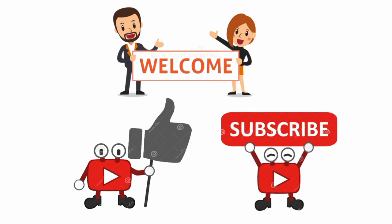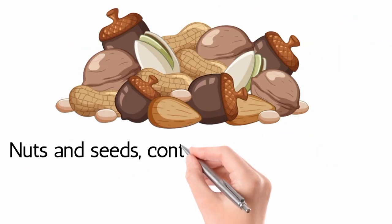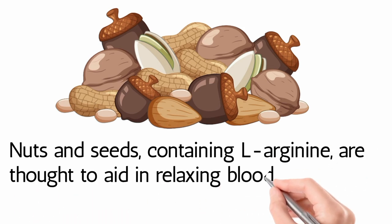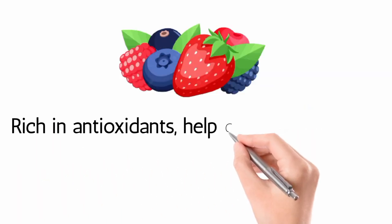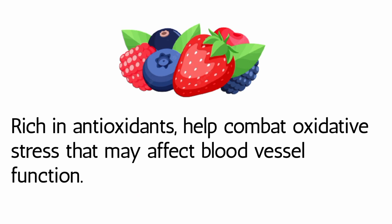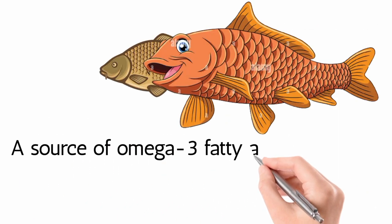Nuts and seeds containing L-arginine are thought to aid in relaxing blood vessels. Berries rich in antioxidants help combat oxidative stress that may affect blood vessel function. Fatty fish, a source of omega-3 fatty acids, contributes to improved blood circulation.